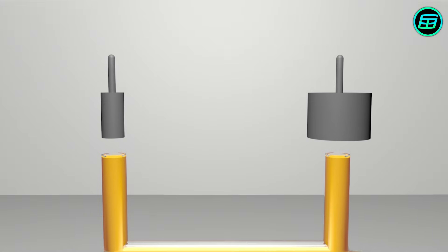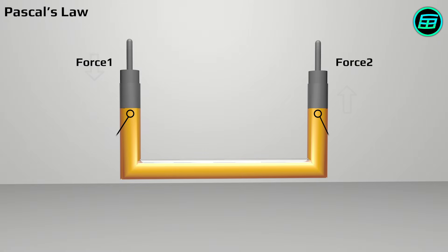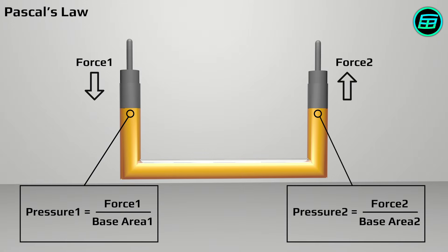The pressure change created in the fluid is transmitted equally everywhere throughout the system. This means that the pressure is always equal under the first piston and the second piston.